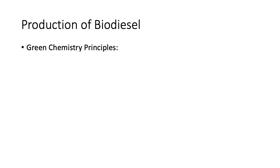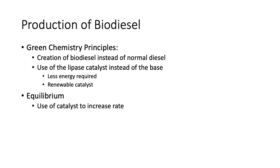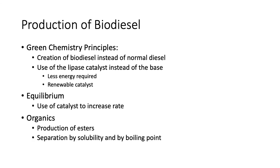Some links to other chemistry ideas: green chemistry principles — making biodiesel instead of normal diesel, and using the lipase catalyst instead of the base catalyst uses less energy and is renewable. Equilibrium concepts involve catalysts. This is also linked to organics, since you're producing esters — you could use ethanol instead of methanol to make different chain-length esters. The separation section links to solubility and boiling points. Make sure you understand those concepts. That's it — see you next time for the production of ethanol!